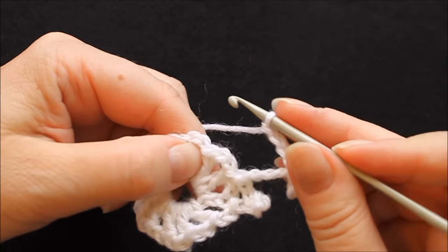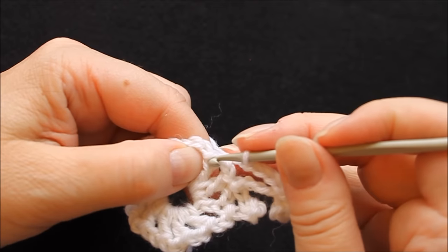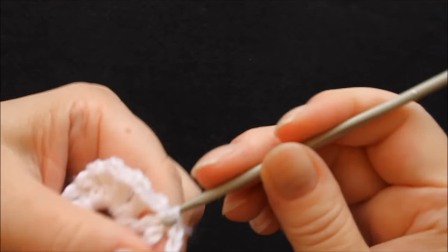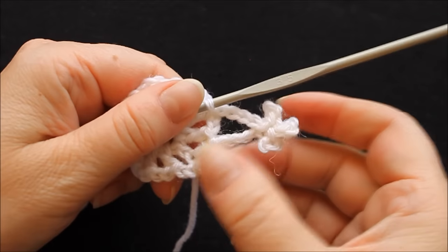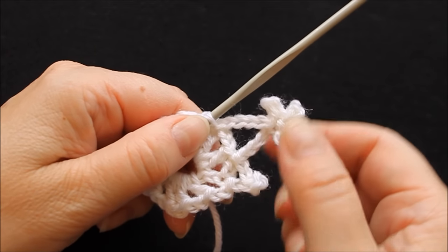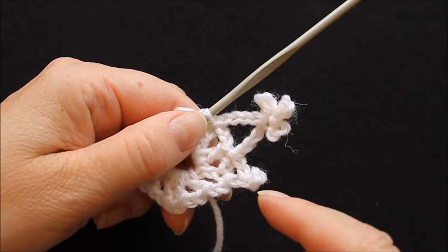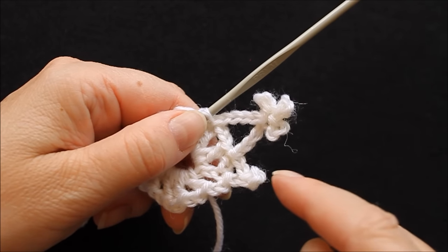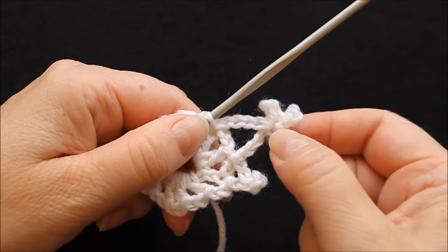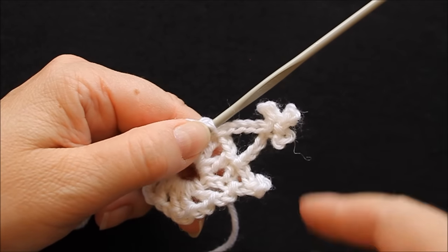And go to the top of the next treble and slip stitch there and simply you continue, every second time you make one like this and then every other second you make one like that until the end of the row.